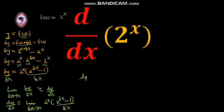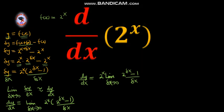We can say that dy/dx equals 2^x times the limit as δx tends to 0 of (2^(δx) minus 1) over δx. Now we are going to try to find this limit as δx tends to 0 of (2^(δx) minus 1) over δx. This is our δx.